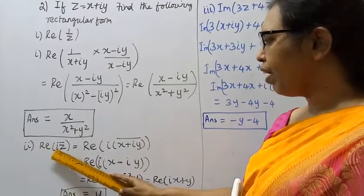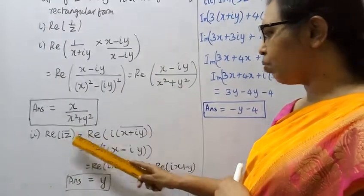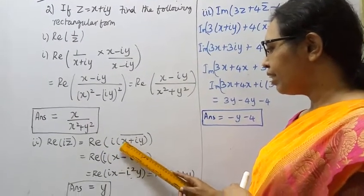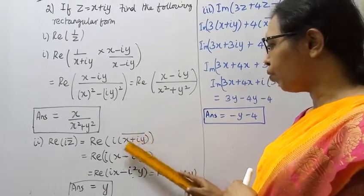Next, find the real part of i times z bar. That is the real part of i into z bar, where z is x plus iy. The whole bar means conjugate.